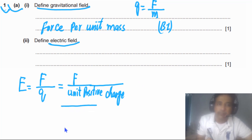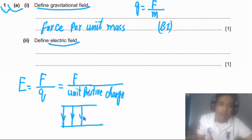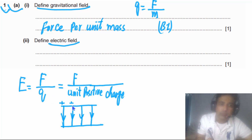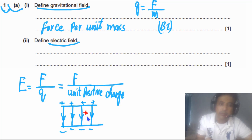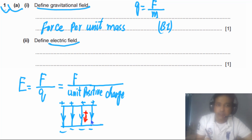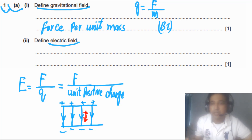Let's imagine we have an electric field with field lines pointing downwards. This means the top plate is positive and the bottom is negative. If we place a positive charge inside this field, it will experience a force downward — that's why the arrows point downwards. Direction of electric field is defined by the force on a unit positive charge.